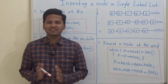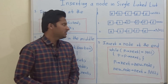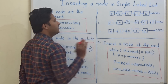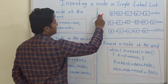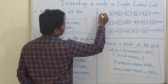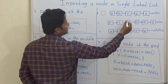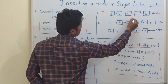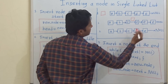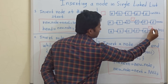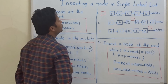Hello friends, today we are going to see how to insert a node in a linked list. So let's see the examples. For inserting a node in a linked list, there are three cases. The first case is inserting the node at the start. The second case is inserting the node somewhere in the middle. And the last case is inserting a node at the end. I will show you these three cases one by one.